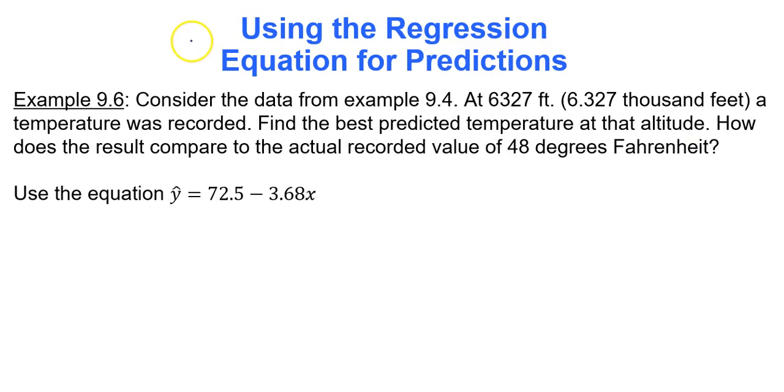Now consider the data from example 9.4. At 6,327 feet, or 6.327 thousand feet, a temperature was recorded. Find the best predicted temperature at that altitude. How does the result compare to the actual recorded value of 48 degrees Fahrenheit? So before you start plugging and chugging for whatever value of x you're looking at, which in this case is the 6.327, you need to run the test for linear correlation. The null hypothesis is that there is no linear correlation, and the alternative hypothesis is always that there is linear correlation.